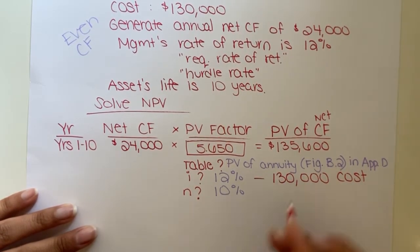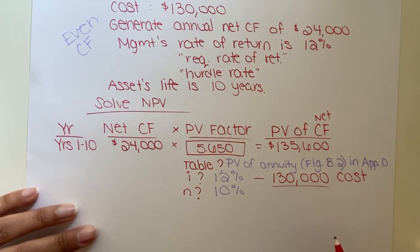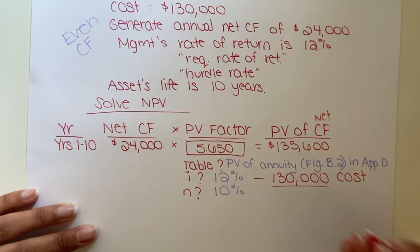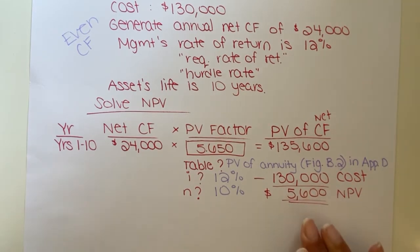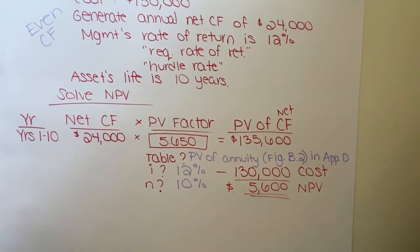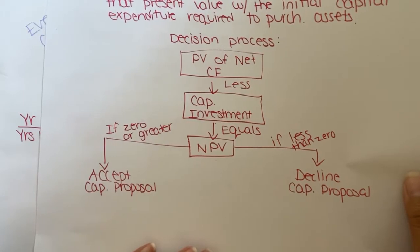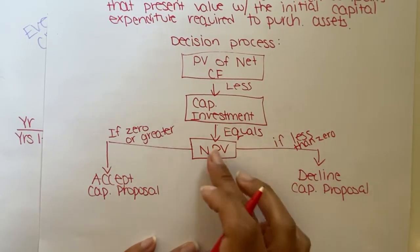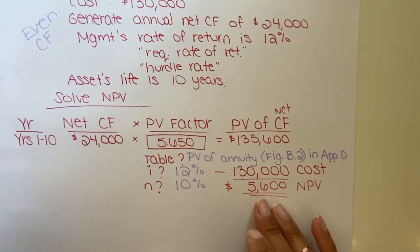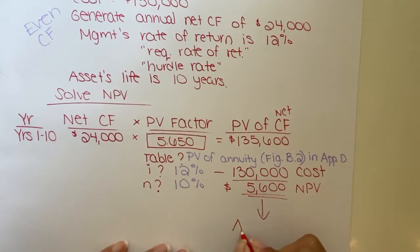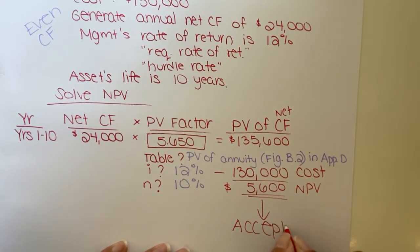Oh my gosh, it's silent — did they finally leave? It's been like 40 minutes of that. So this is our net present value. We're not done — we have to make our recommendation on whether management should accept this capital proposal or reject it. We said our decision criteria was: if it's zero or greater, they should accept. We have an amount well over zero — it's $5,600. So we recommend that management accepts or purchases this capital asset.